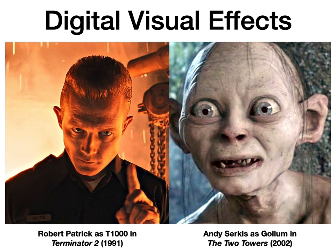And Andy Serkis' memorable portrayal as Gollum in The Two Towers, which was a remarkable performance that should have been nominated for the Oscar. It arguably wasn't because Academy voters had no idea whether to classify what he was doing as acting or as animation. Because Gollum is one of those characters, like the T-1000, where the magic comes through an interaction between what the actor is doing and what hundreds, if not thousands, of animators are doing in collaboration with the actor.